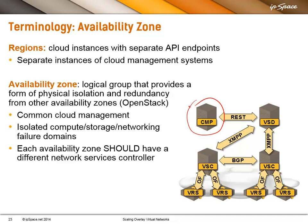Within a region, you would have one or more availability zones. The OpenStack definition is that an availability zone is a logical group that provides some form of physical isolation and redundancy. You would have a common cloud management platform, but for example, you would have isolated networking failure domains. And if we are talking about controller-based networking, a single controller is a single failure domain, which means you should have a different SDN controller for every availability zone.